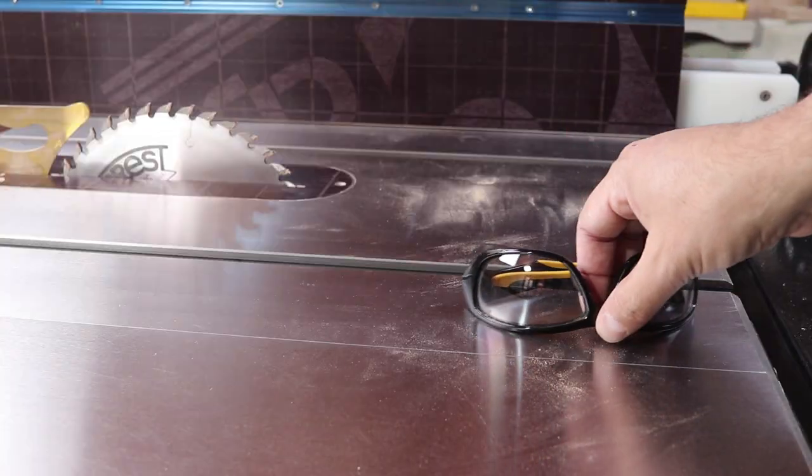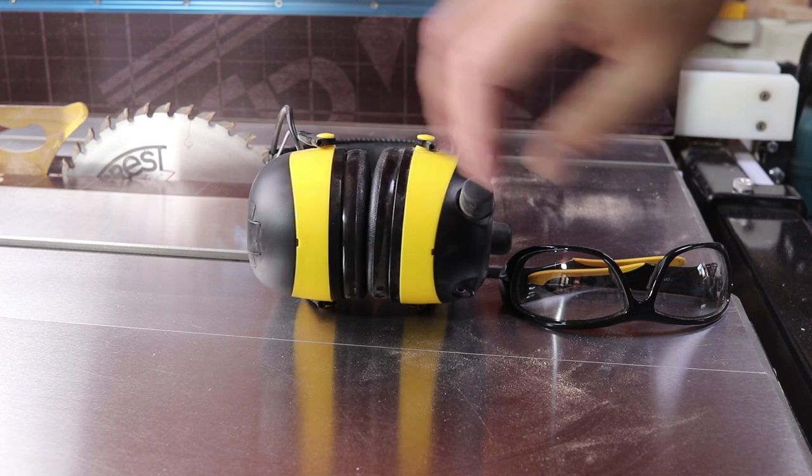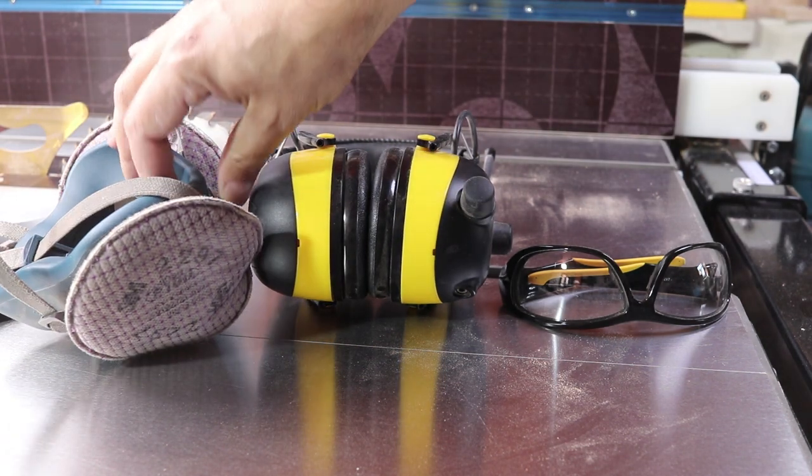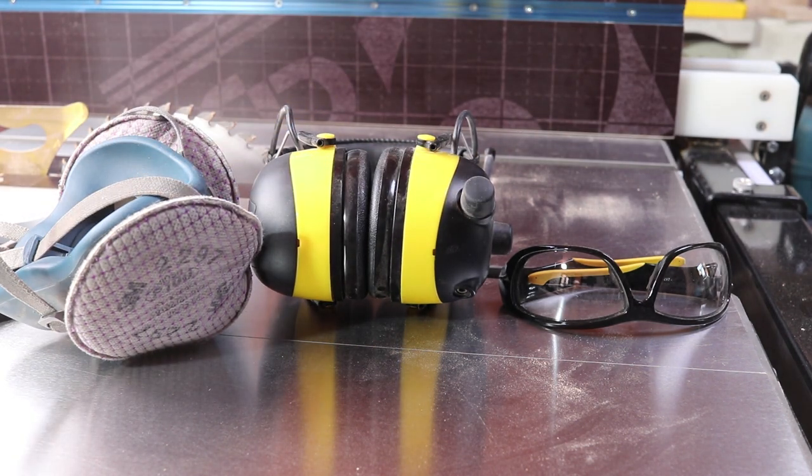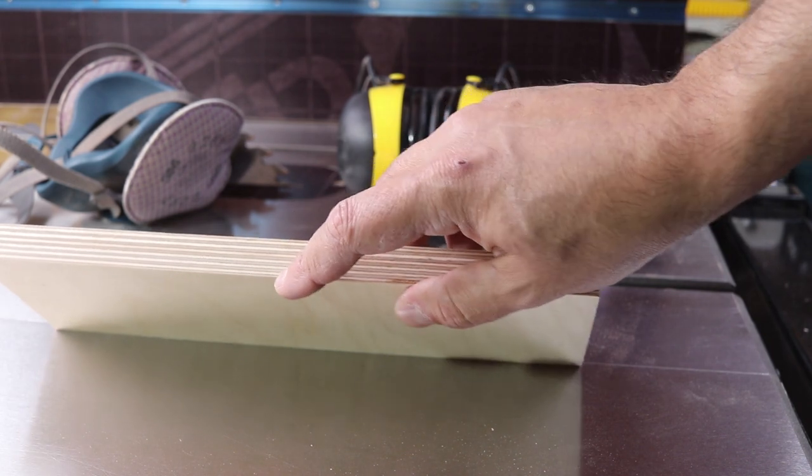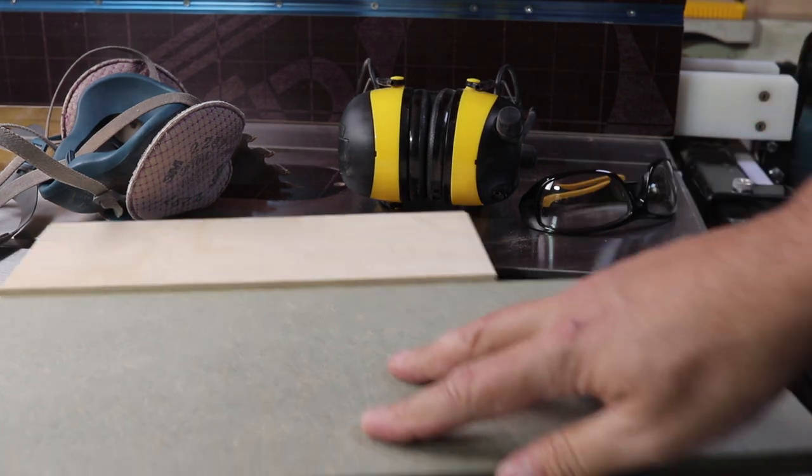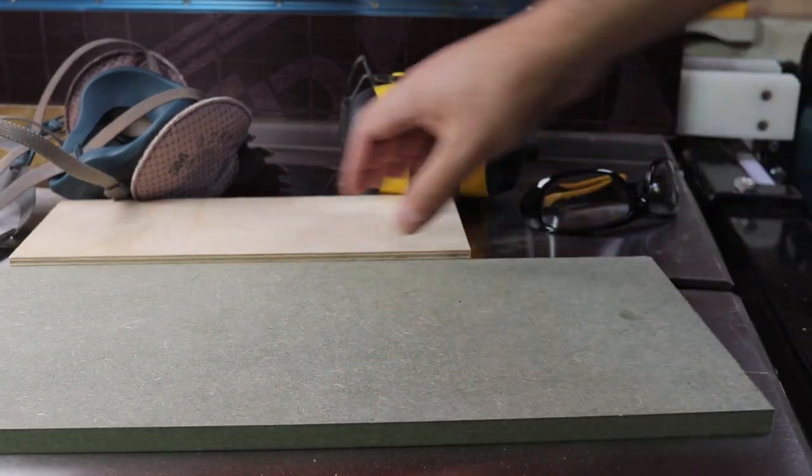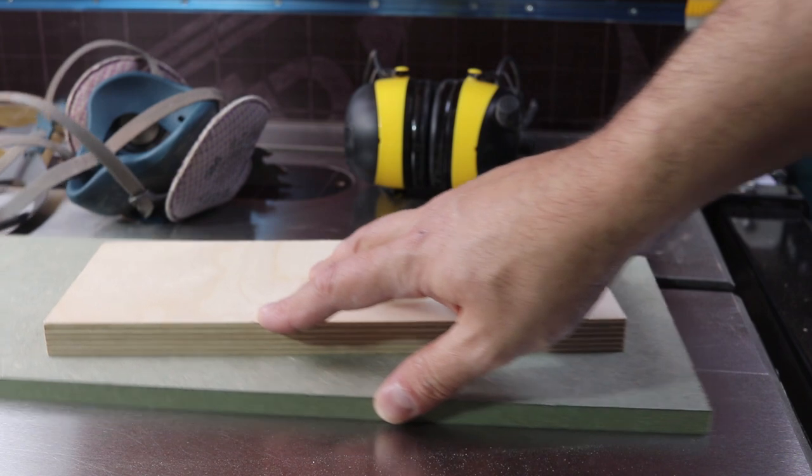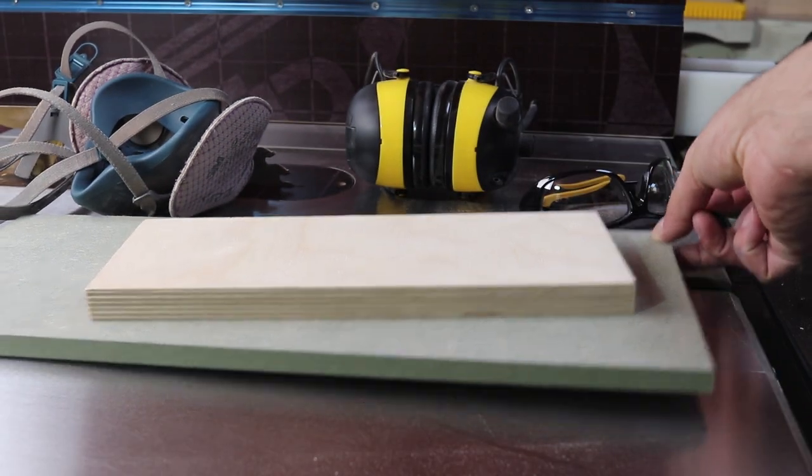You need to use eye protection, hearing protection, and a dust mask whenever you are using your table saw. The dust mask becomes a must when you are cutting plywood and MDF, as these boards contain some kind of epoxy that will be turned into dust when you cut these boards. Trust me, you don't need to inhale that stuff.